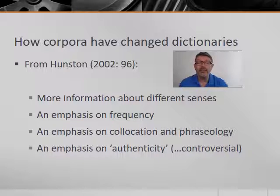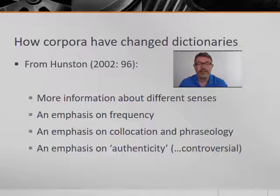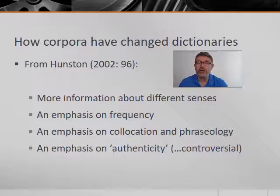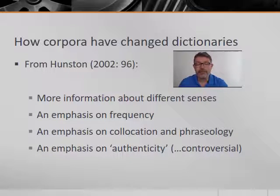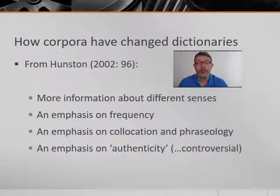In particular, lexicographers can now give much more information about different senses of each word since they have much more data at their fingertips. They can give more accurate information about the frequency of occurrence of each word and phrase. They can give more detailed information about collocates and phraseology — in other words, what words the terms to be defined are found alongside. And they can claim that their citations for each sense are authentic, especially if they are drawn from corpus data, although, as we shall see, there is some controversy about the use of corpus data in illustrating the senses of words.